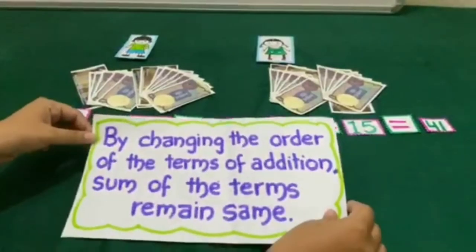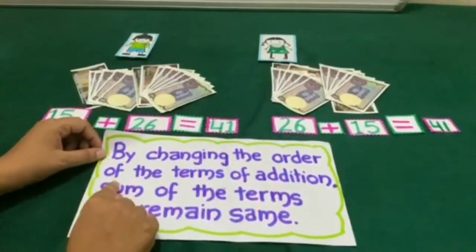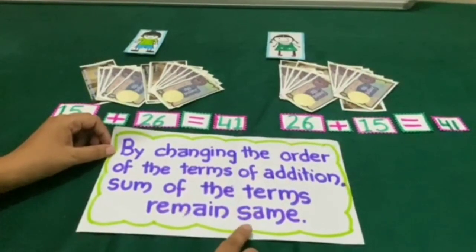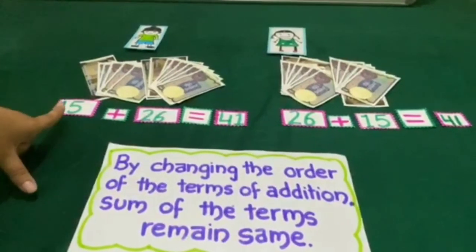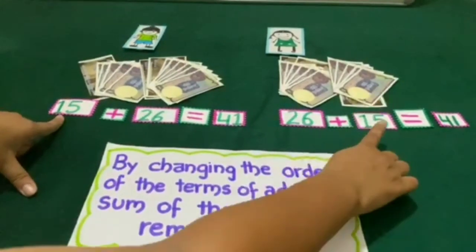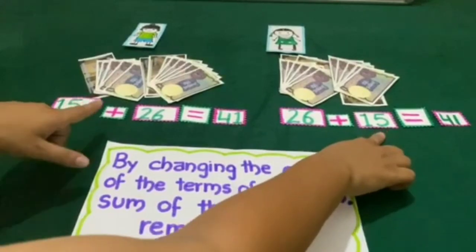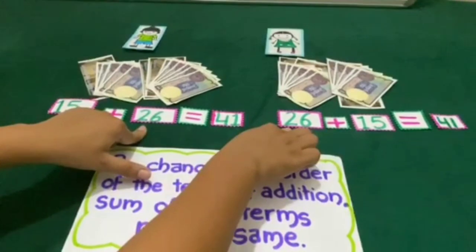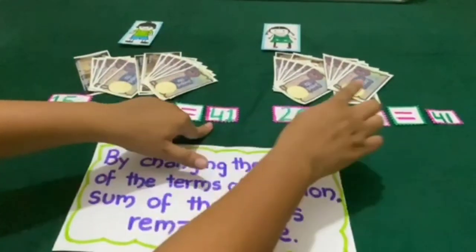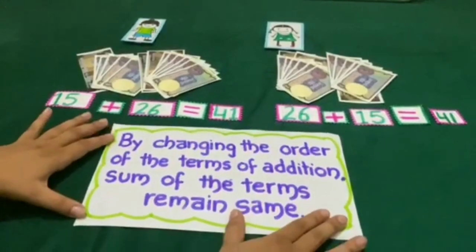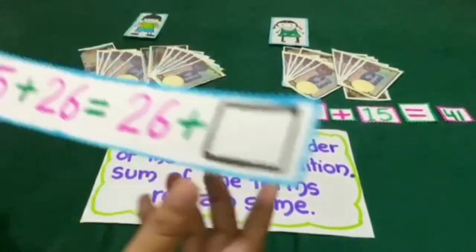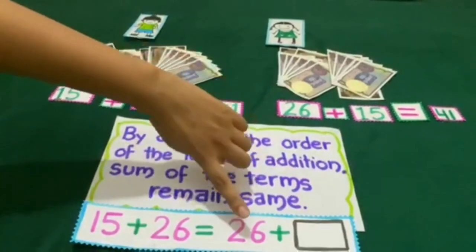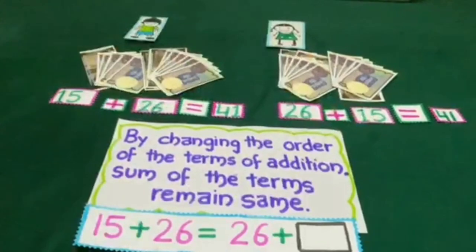Now we have learnt that by changing the order of the terms of addition, the sum of the terms remains the same. It doesn't matter whether 15 is placed first or after the plus sign, or 26 is after or before the plus sign. So here we have 15 plus 26 is equal to 26 plus 15.